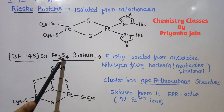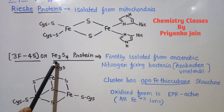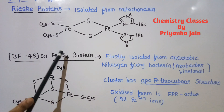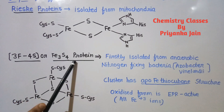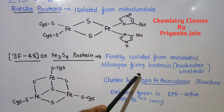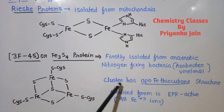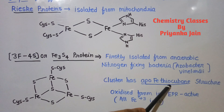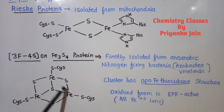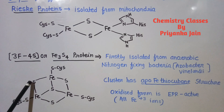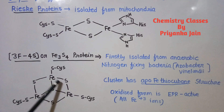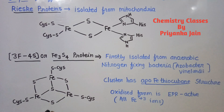Next is the 3Fe4S ferredoxin: there are three iron atoms and four acid-labile inorganic sulfides present. This type of ferredoxin was first isolated from anaerobic nitrogen-fixing bacteria such as Azotobacter vinelandii. This cluster has an apo-Fe-thiocubane structure: three iron atoms are all bridged by a central sulfur, while pairs of irons are also bridged by acid-labile sulfides, and sulfur atoms from cysteine residues are attached to each iron atom.